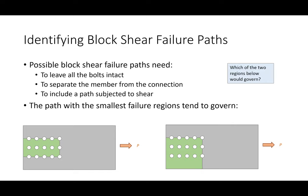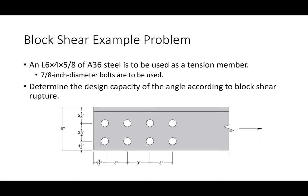For example, this path on the left surrounds all of the bolts — if you took a pair of scissors and cut along these green lines, you'd separate the member from that block. It satisfies both rules and has a shear path. The same applies to the second path shown. Some of you might think you can just cut straight across, but that's not a block shear failure path — that's net section fracture. It's not block shear because there's no shear; there's no block being sheared against another.